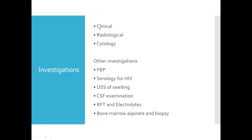Investigations include clinical investigations, radiological investigations, and cytology, along with other tests. We can do serology for HIV — remember we have HIV-associated Burkitt's lymphoma. You can also do an ultrasound scan of the swelling, CSF examination, renal function test, electrolytes, and bone marrow aspirate and biopsy.